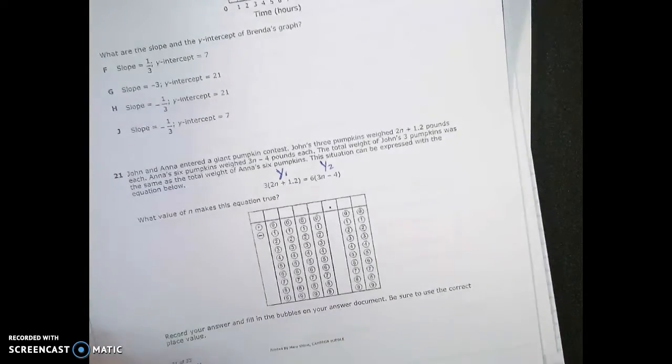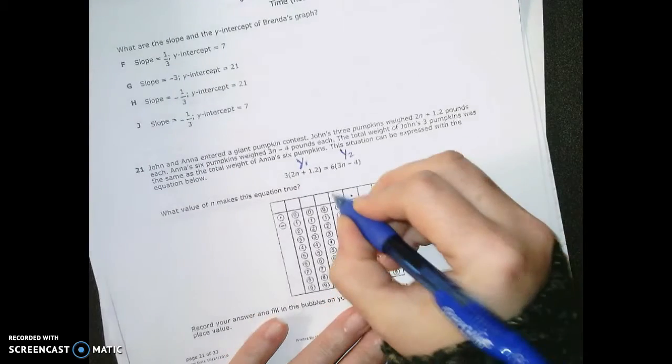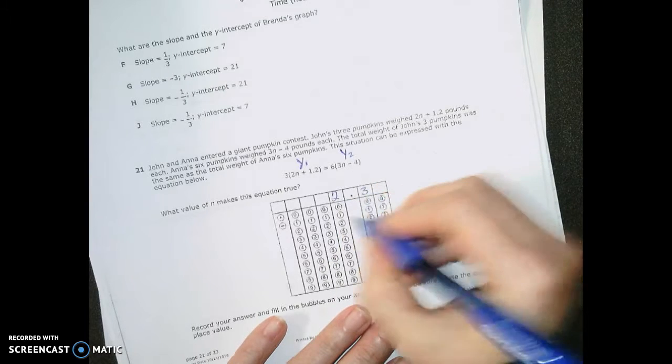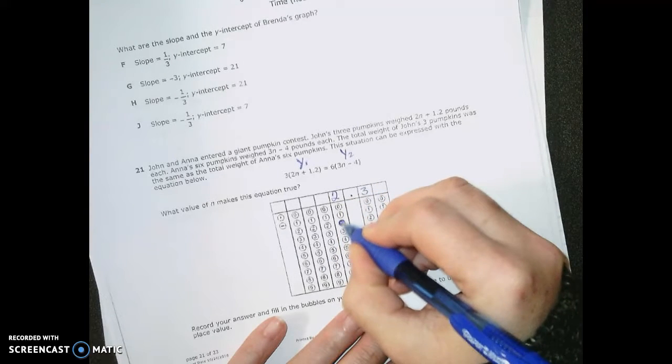So in my griddable here, I'll put in 2.3. Remember, bubble in the 2 carefully, bubble in your 3.